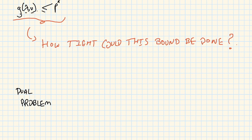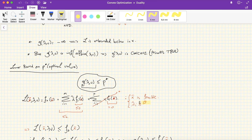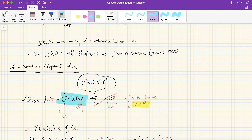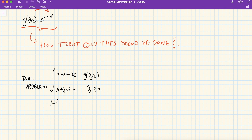We're trying to maximize g subject to a positivity constraint on lambda. This positivity constraint is essential: the bound only holds when all lambda_i's are non-negative, because the bound followed from the blue term being negative. Since x-bar is a feasible point and the f_i's are negative, we force lambda_i's to be positive so that chunk is negative. This gives us the dual problem, and we introduce the term 'dual feasible'.